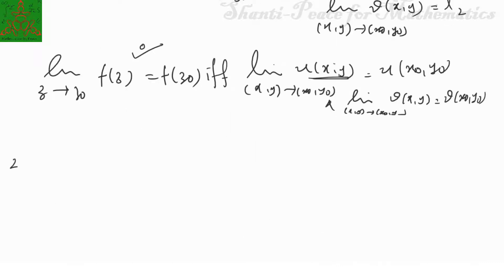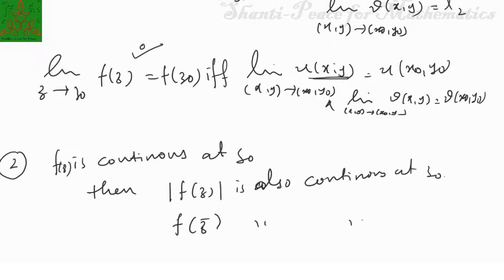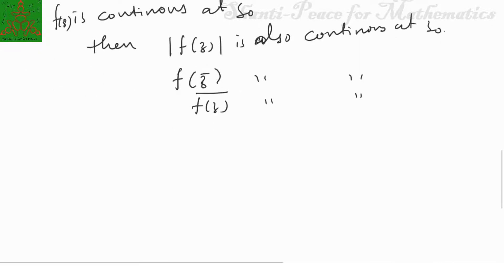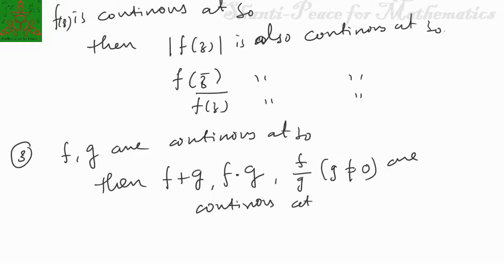As a second remark: if f is continuous at z₀, then |f(z)| is also continuous at z₀. We can add that the conjugate f̄(z) and f(z̄) are also continuous at z₀. As a third remark, using the theorem that the sum of two limits is the limit of the sum: if f and g are continuous at z₀, then f + g, f · g, and f/g (provided g ≠ 0) are all continuous at z₀.